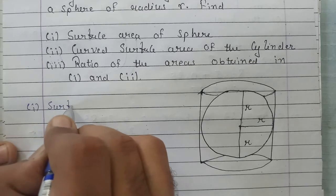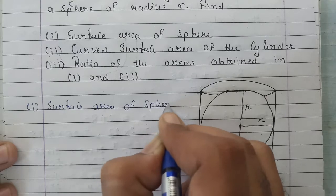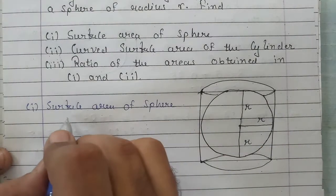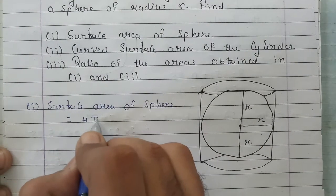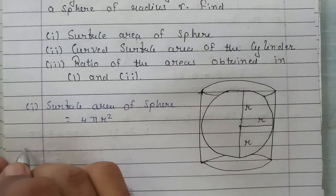Surface area of sphere with radius r. The surface area will be 4 pi r square. Got it.